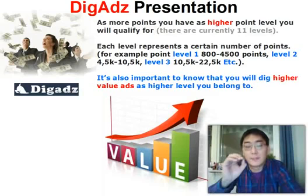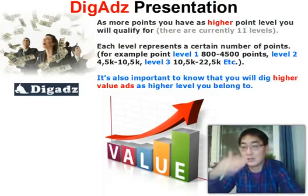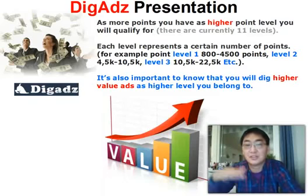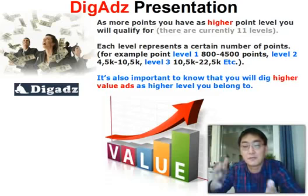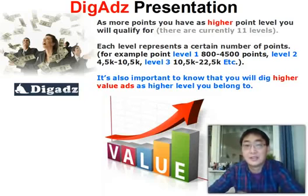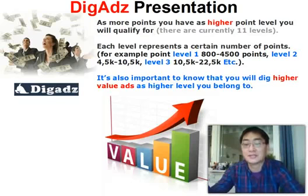As more points you have, the higher up in levels you get. If you can't purchase many bundle ads, you can click points ads to accumulate points and eventually reach higher levels. This system is also for people on a budget who cannot afford buying many bundle ads at once — you can develop your account gradually and purchase more bundle ads from your earnings.